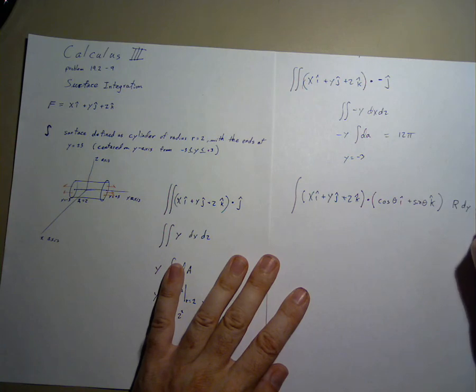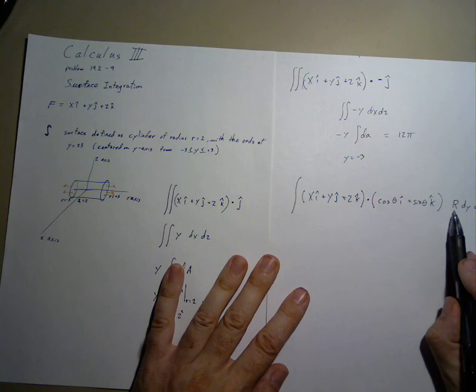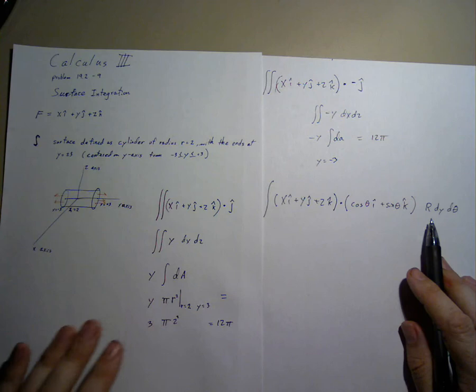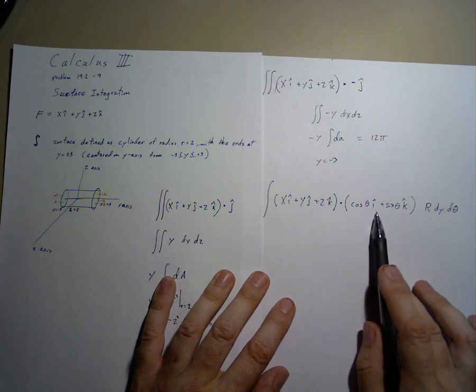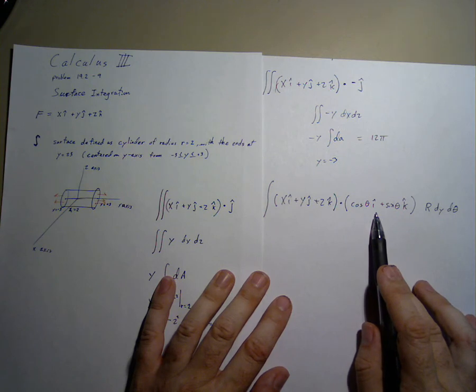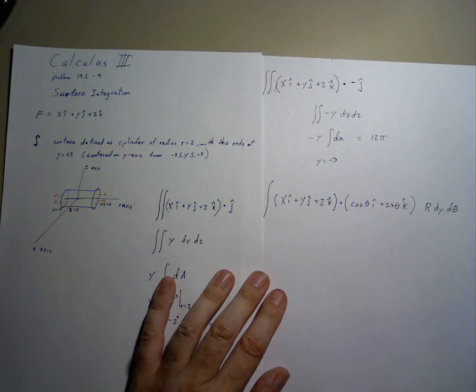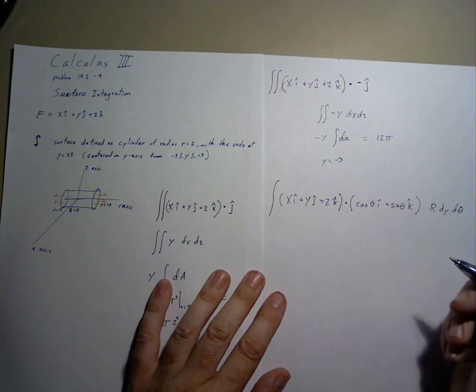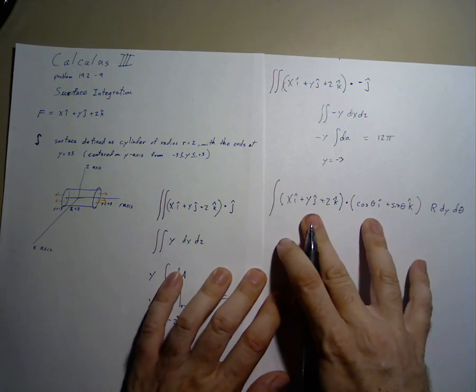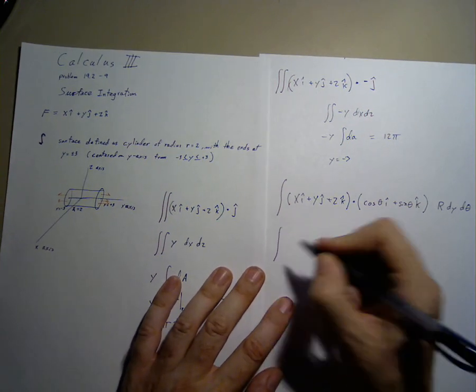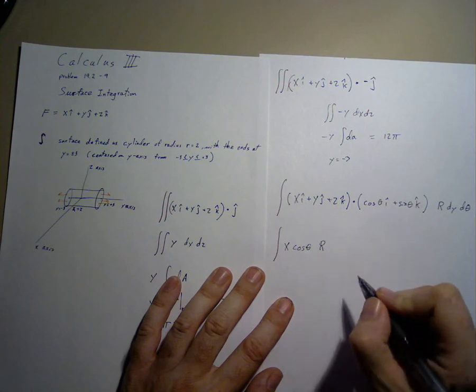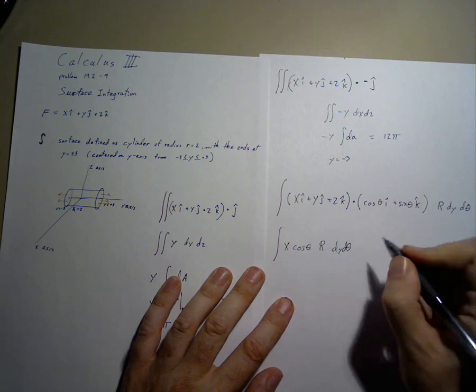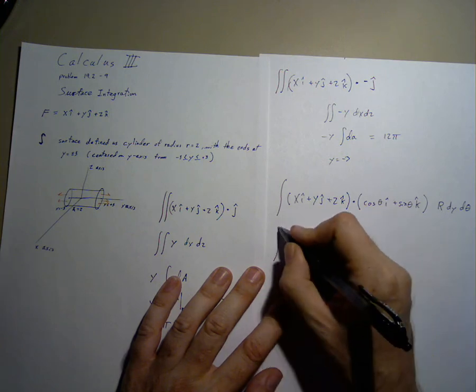The trick is we always need a perpendicular vector to the surface. In this case, we'll write it out as cosine theta i-hat plus sine theta k-hat. Also, we need to be careful with the differentials at the end. Notice, because we're doing it in cylindrical coordinates, we have r included. Let's simplify. Let's take the dot product and we will get our i-hat x cosine theta r dy d theta.